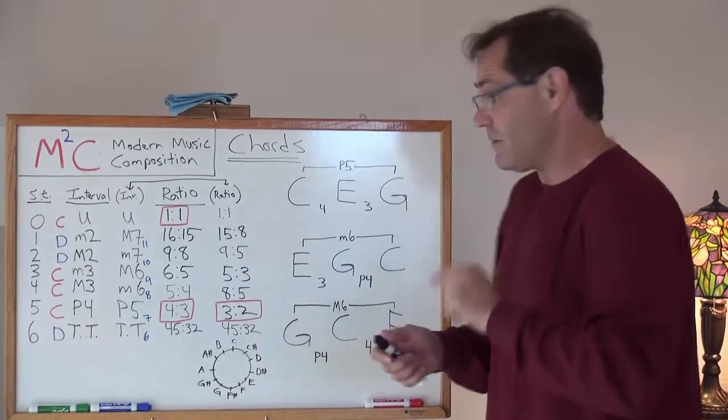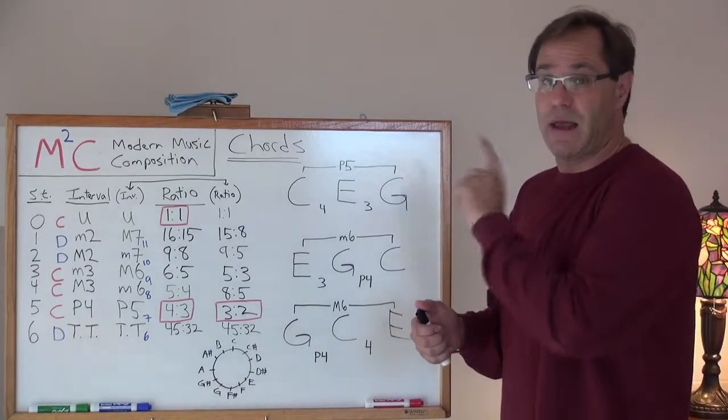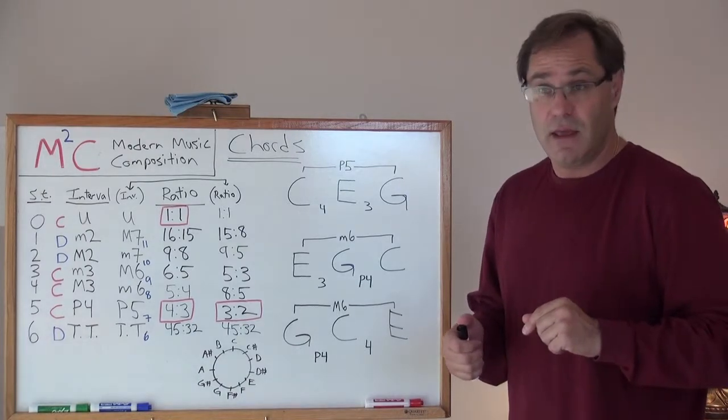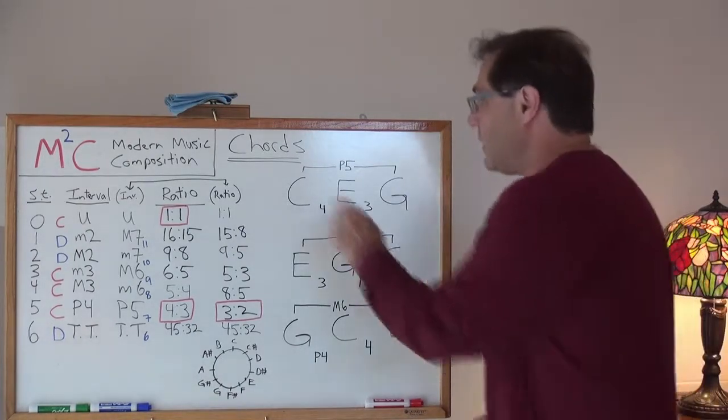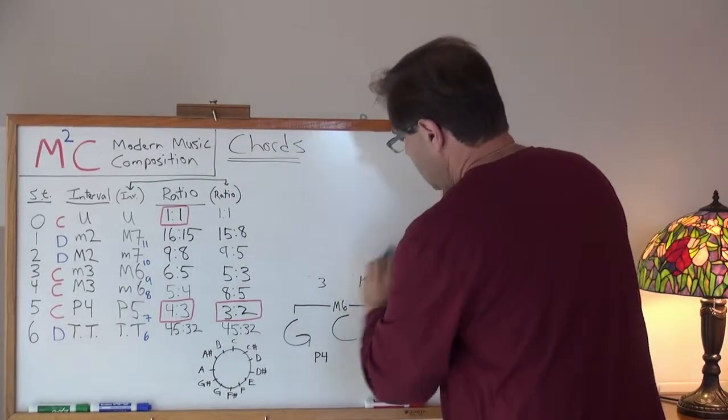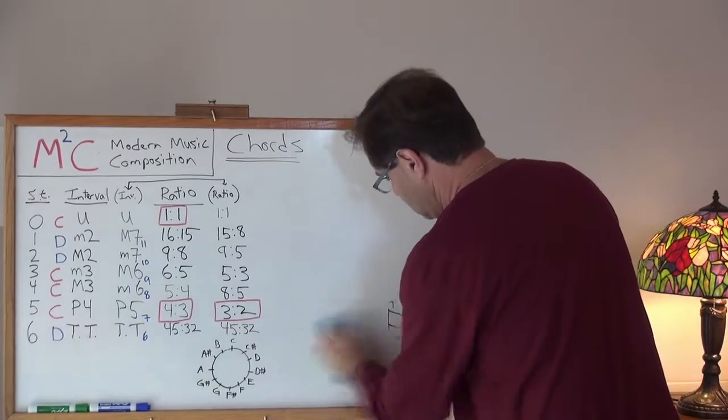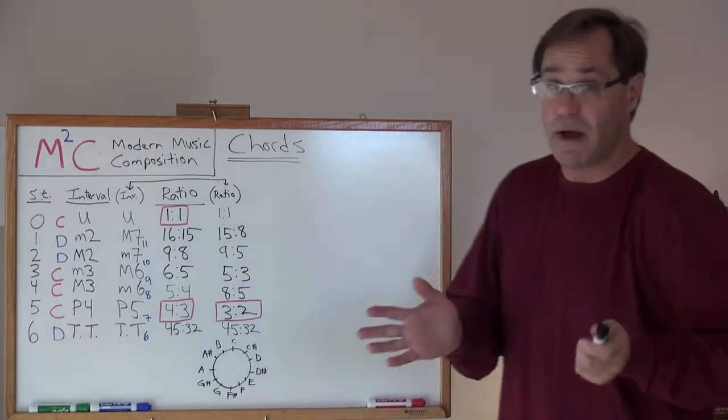Now, it turns out that chords don't get dissonant until you add a fourth note. And that's a seventh chord. So, actually, let's go over that real briefly. And understand why. Understand why that's the case.